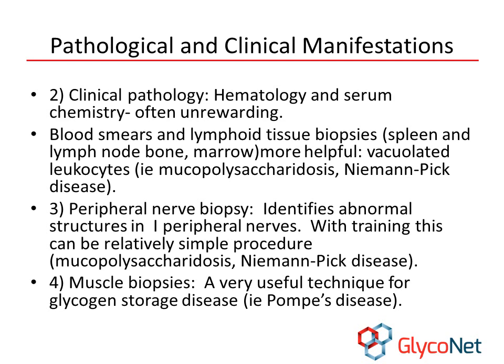Some tests are more helpful than others. Routine CBCs and serum chemistries are not very useful for identifying lysosomal storage diseases. In contrast, aspirates and biopsies are excellent diagnostic tools. Aspirates of the bone marrow, lymph node, spleen, or liver can be used to determine Niemann-Pick disease in cats. Biopsies of nerves identifying inclusions within axons and ganglia have been used to determine the presence of Niemann-Pick disease and mucopolysaccharidosis in people and animals. Muscle biopsies are used to determine the presence of Pompe's disease. Cerebrospinal fluid analysis can identify lysosomal storage diseases and their involvement with the central nervous system. Non-invasive techniques such as urinalysis, radiographs, and advanced imaging including MRI can also help in diagnosis.